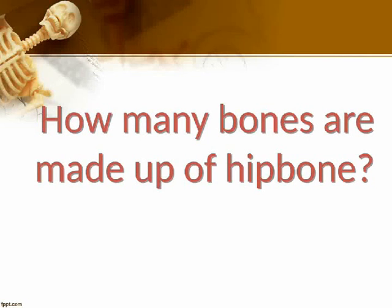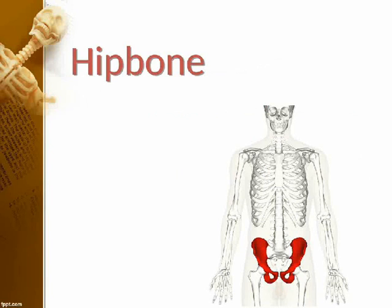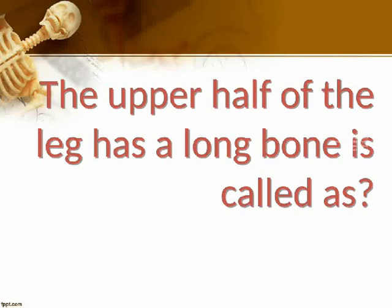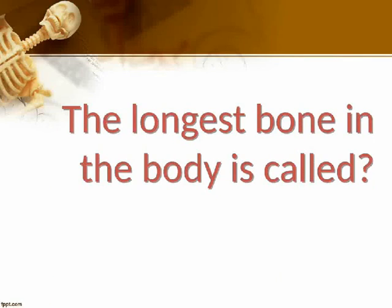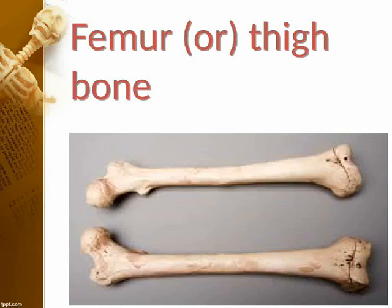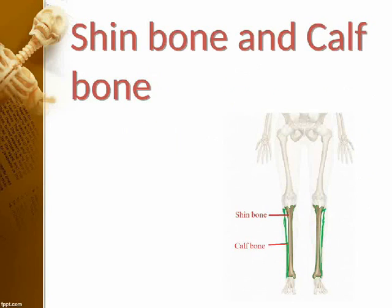How many bones make up the hip bone? 3. The bones of the legs are attached to the hip bone. The upper half of the leg has a long bone called the femur, or thigh bone. The longest bone in the body is the femur, or thigh bone. What bones are there in the lower half of the leg? Shin bone and calf bone.